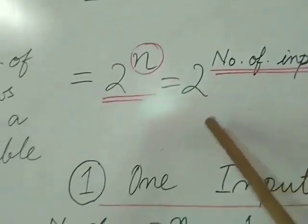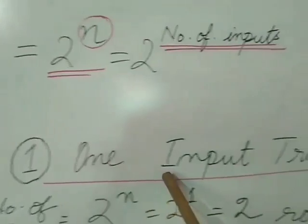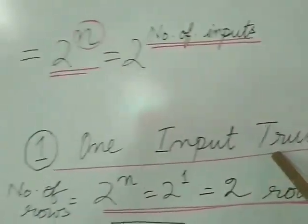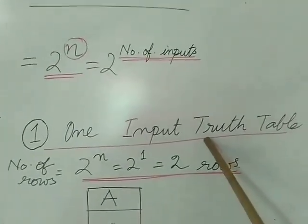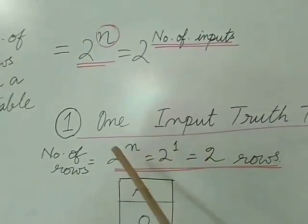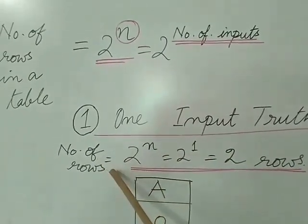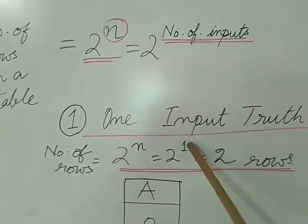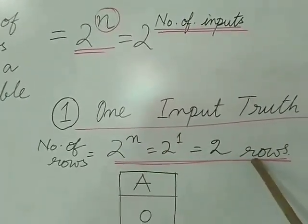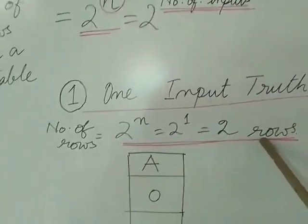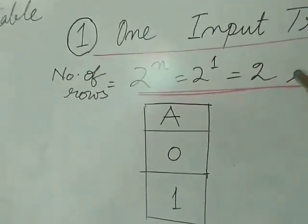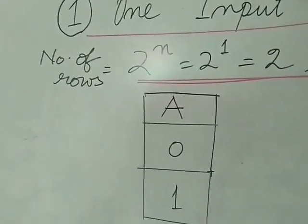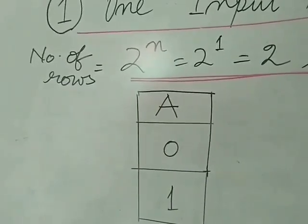Suppose the number of inputs is 1. We'll see how to create a truth table for 1 input. In that case, the number of rows will be 2 to the power 1, so we'll have 2 rows only. The truth table having 1 input looks like this — A is the input with values 0 and 1.